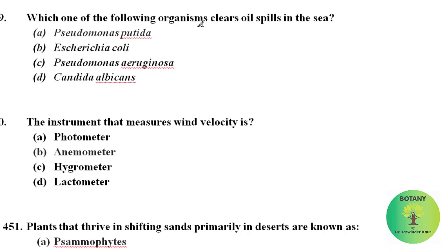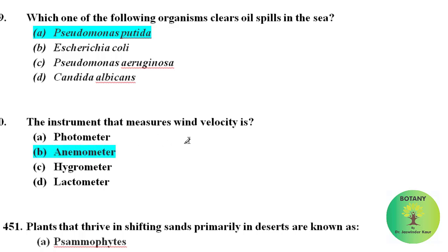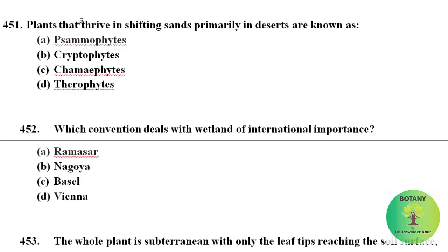Which organism clears oil spills in the sea? Pseudomonas putida is the organism that clears oil spills in the sea. The instrument that measures wind velocity is the anemometer.